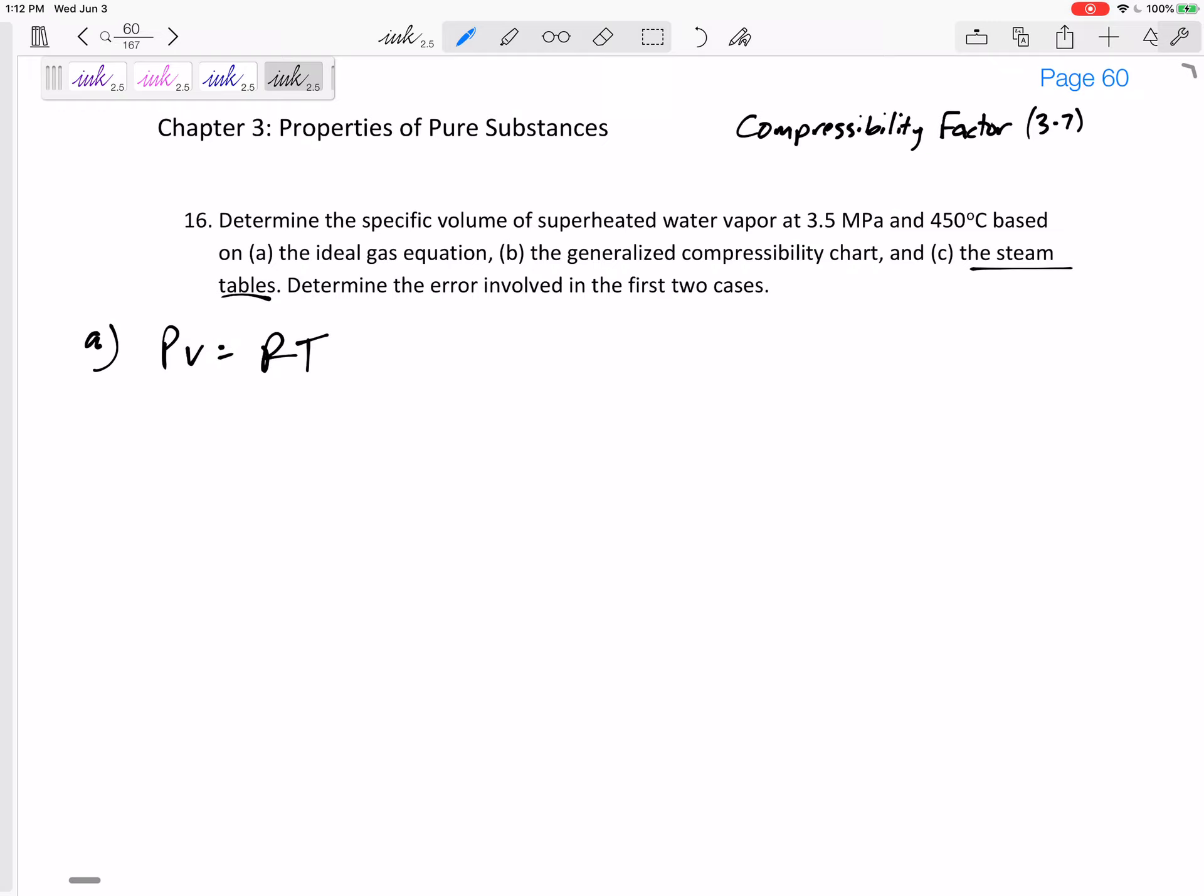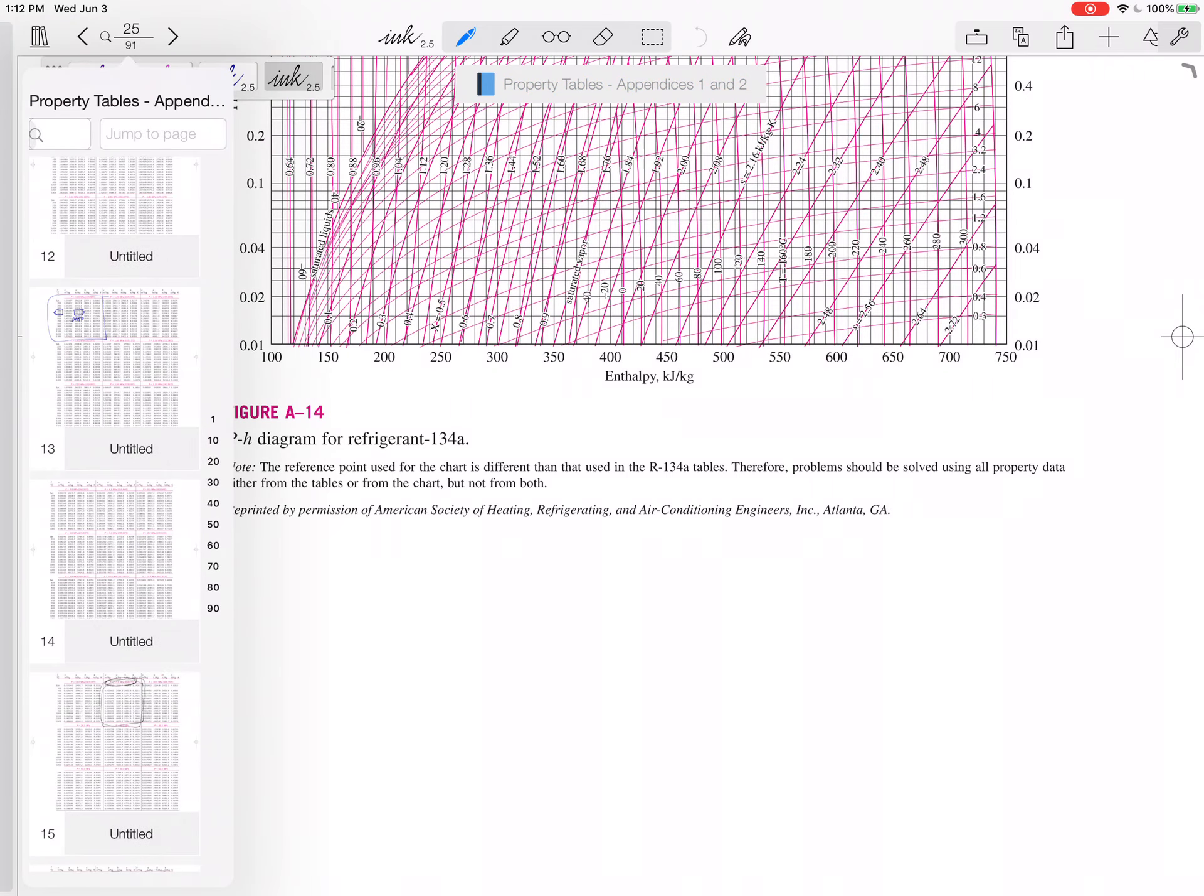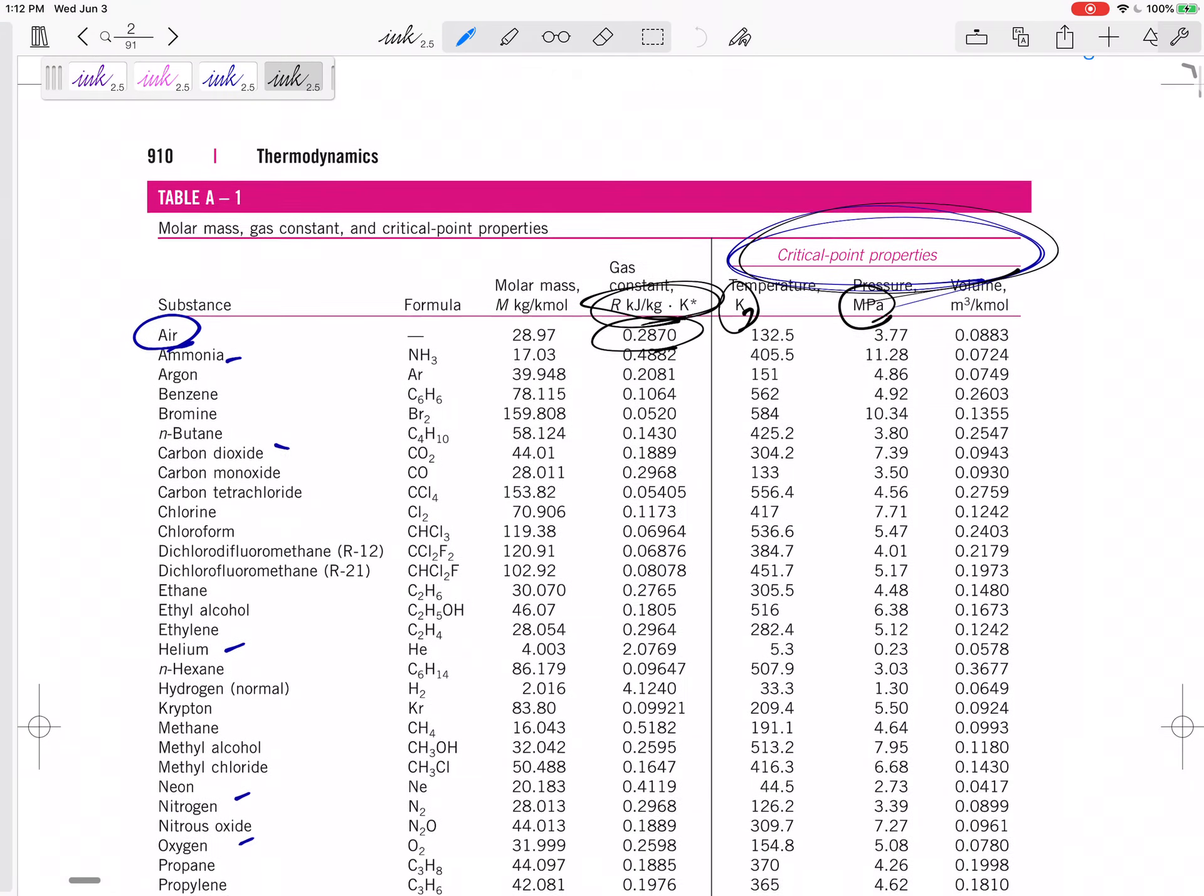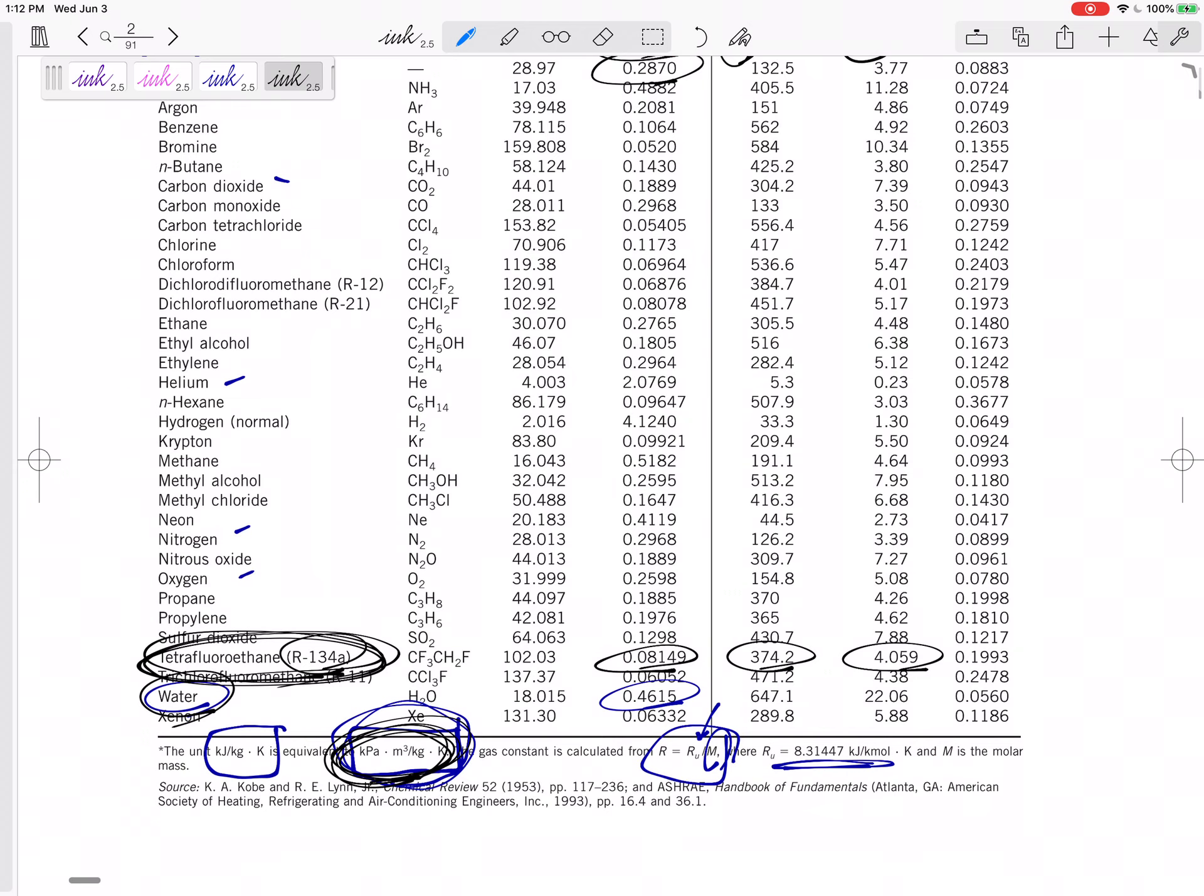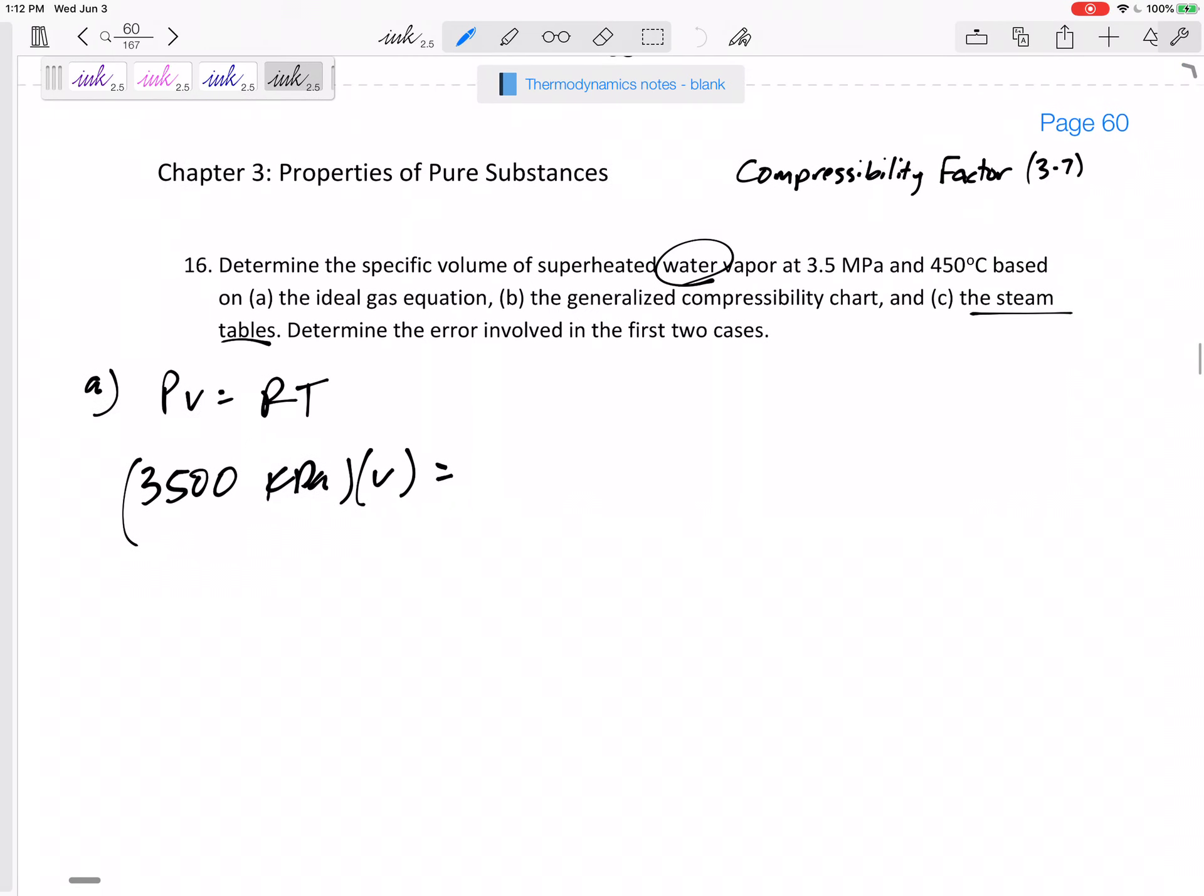Let's try PV equals RT. Pressure 3,500 kPa, the V is what we're looking for, the R. So I would go to water, table A1. So property tables, table A1. Are we in SI units? Yeah. On table A1, for water down here, the R value, 0.4615 kPa meters cubed per kilogram. All right, so this is 0.4615 kPa meters cubed per kilogram K.